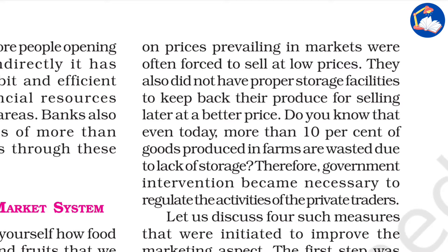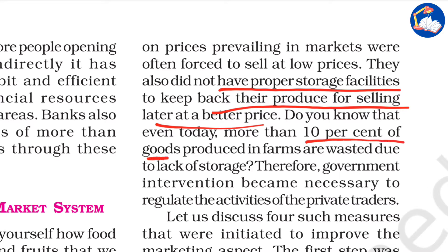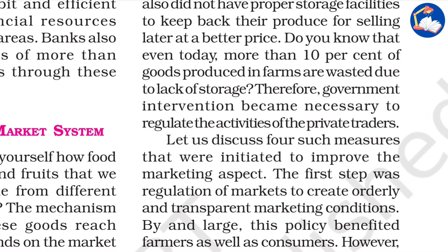Farmers had a certain need for money, so they would sell their produce in a hurry and get whatever money they could. They also lacked proper storage facilities to hold back produce for selling later at a better price. Even today, more than 10 percent of food grains produced on farms are wasted due to lack of storage. Therefore, government intervention became necessary to regulate activities of private traders — an example of the socialist aspect of India's mixed economy.